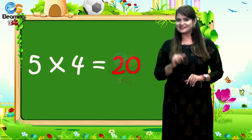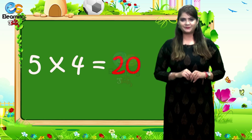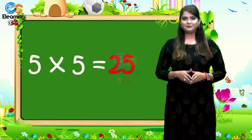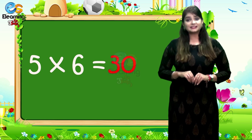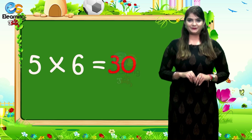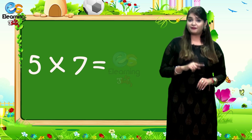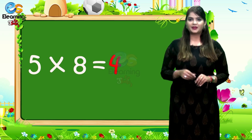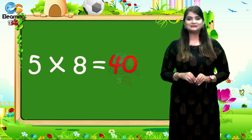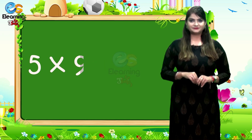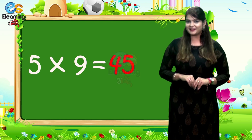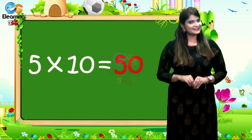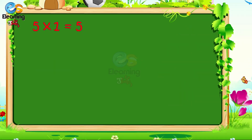5 1s are 5. 5 2s are 10. 5 3s are 15. 5 4s are 20. 5 5s are 25. 5 6s are 30. 5 7s are 35. 5 8s are 40. 5 9s are 45. 5 10s are 50.